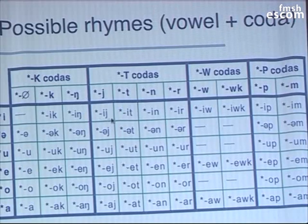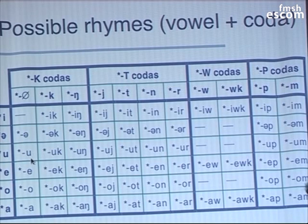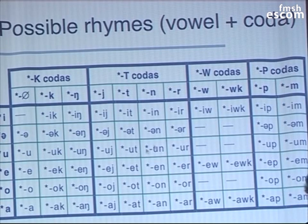So, if you figure out the possible rhymes — just the combinations of vowel plus coda — not all of the ones that you can imagine occur. Here are the K codas, T codas, W codas, P codas; here are the six vowels; so here are the gaps. We reconstruct IJ, but not a plain I, and that's a little asymmetrical, because you would think that we would reconstruct UW, but not U — but that's not what we do.